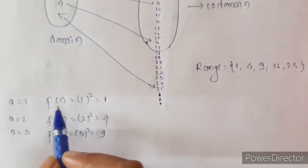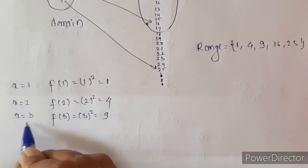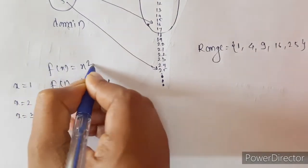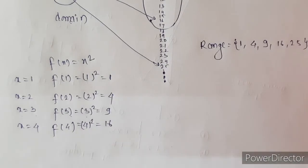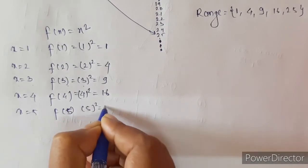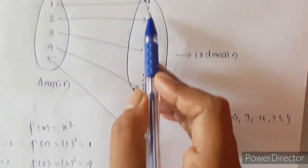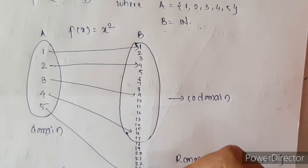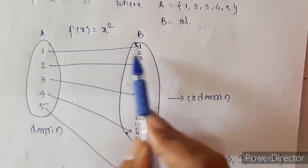If x = 1, f(1) = 1. If x = 2, f(2) = 2² = 4. If x = 3, f(3) = 3² = 9. If x = 4, f(4) = 4² = 16. And f(5) = 5² = 25. So: 1 is related to 1, 2 is related to 4, 3 is related to 9, 4 is related to 16, and 5 is related to 25. Every element from A is related to only one element from B — it is not related to more than one element of B.